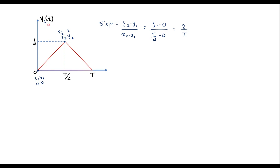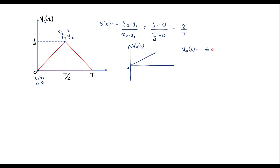Now let me synthesize V1 of t — that is, split this signal into components. At t = 0 there exists one ramp signal of slope 2/T. I will call the first signal VA of t, which is a ramp signal beginning at t = 0 with slope 2/T continuing to infinity. I can represent VA of t as (2/T) · t · u(t).